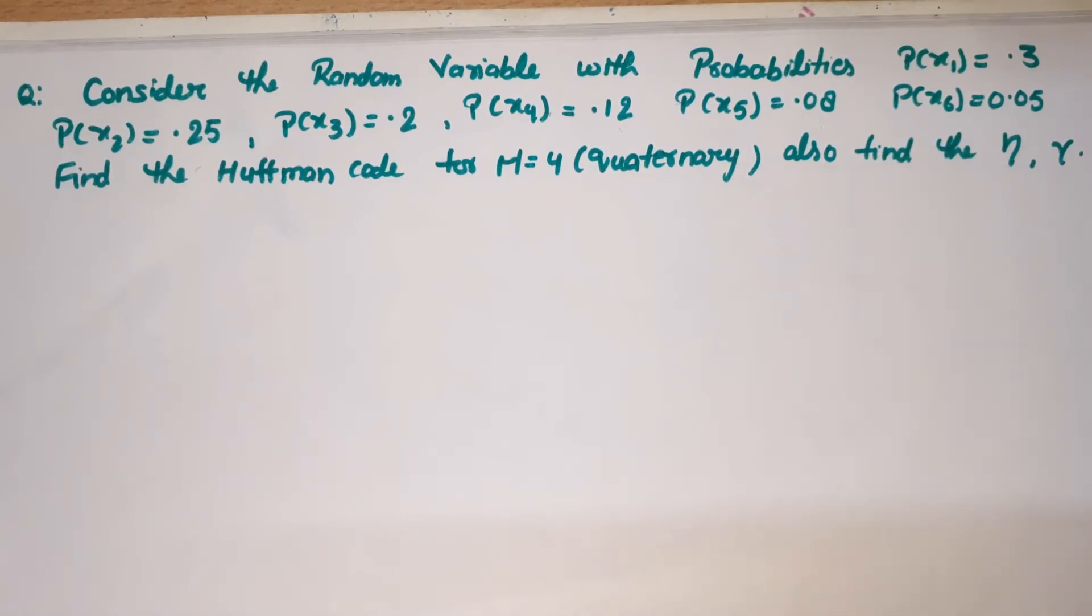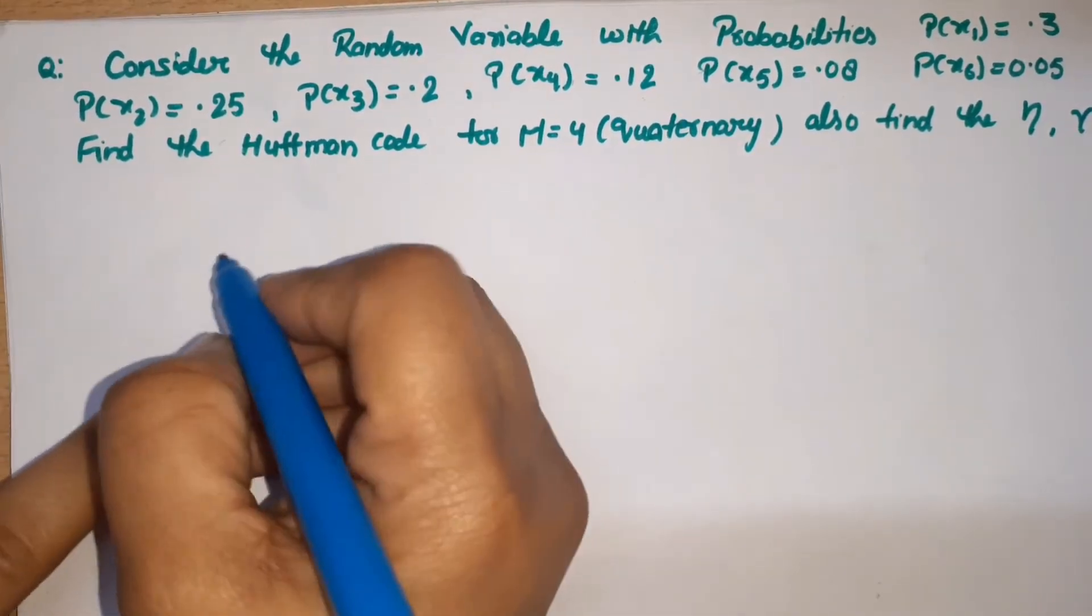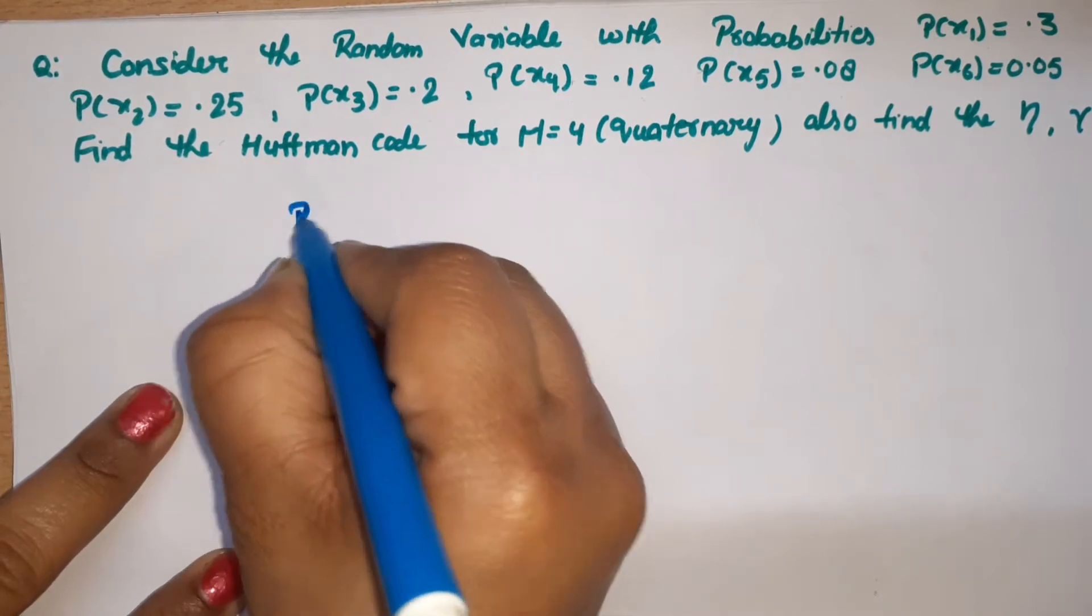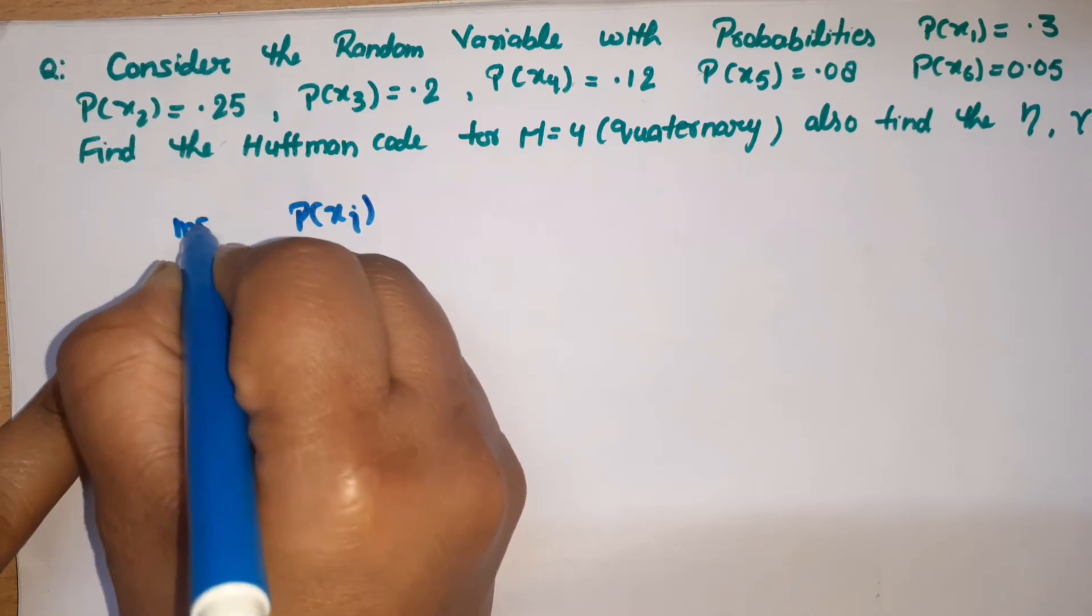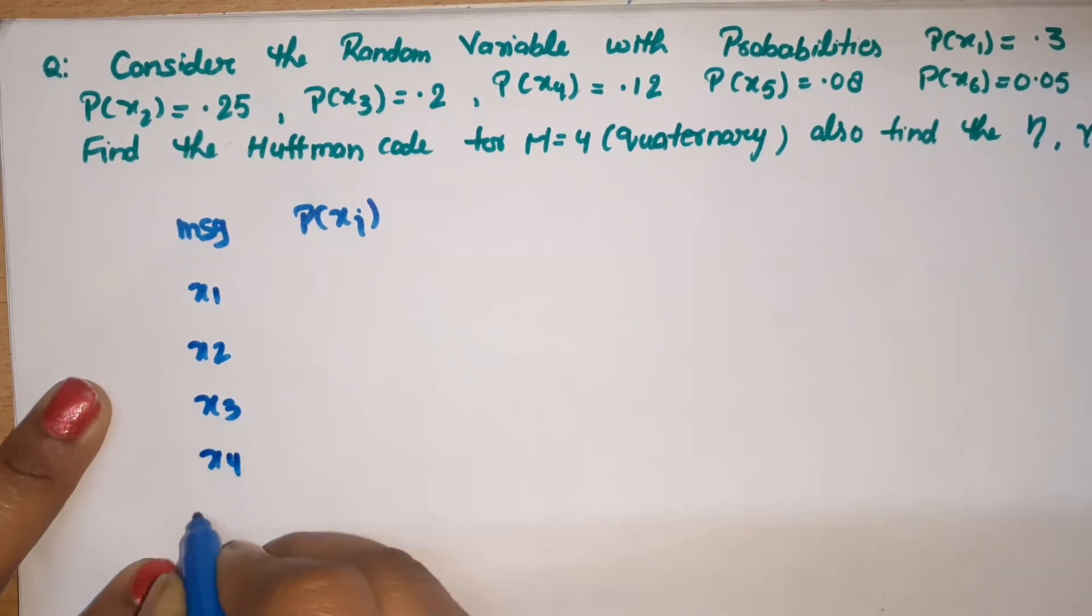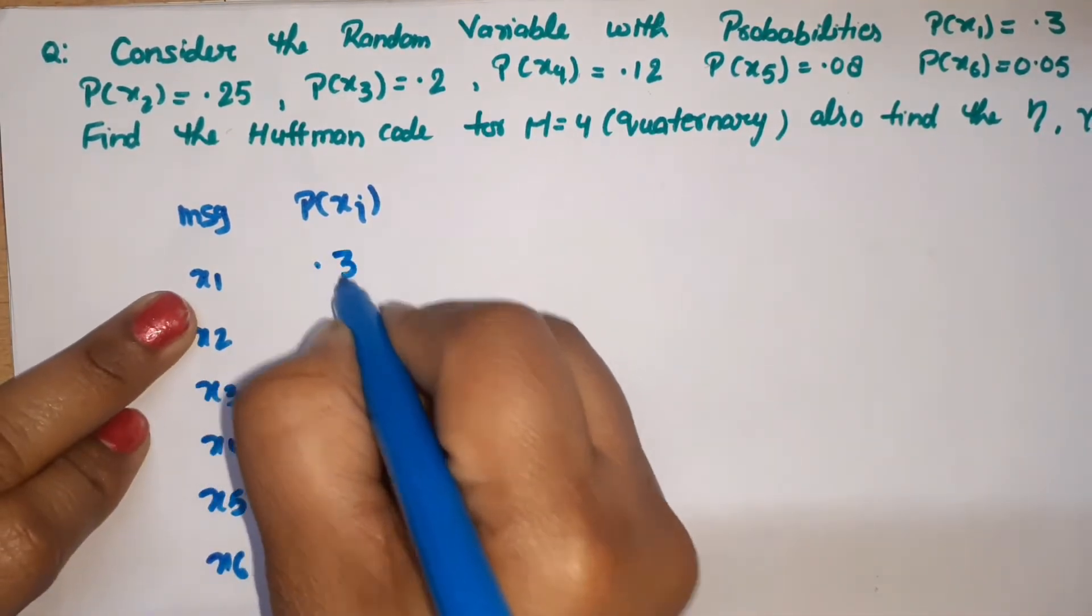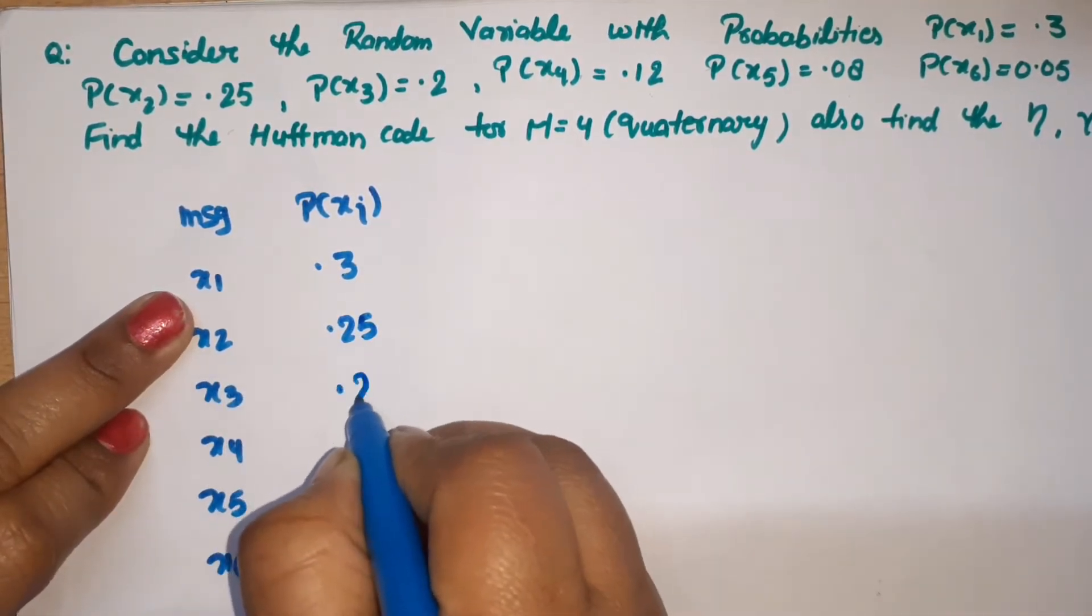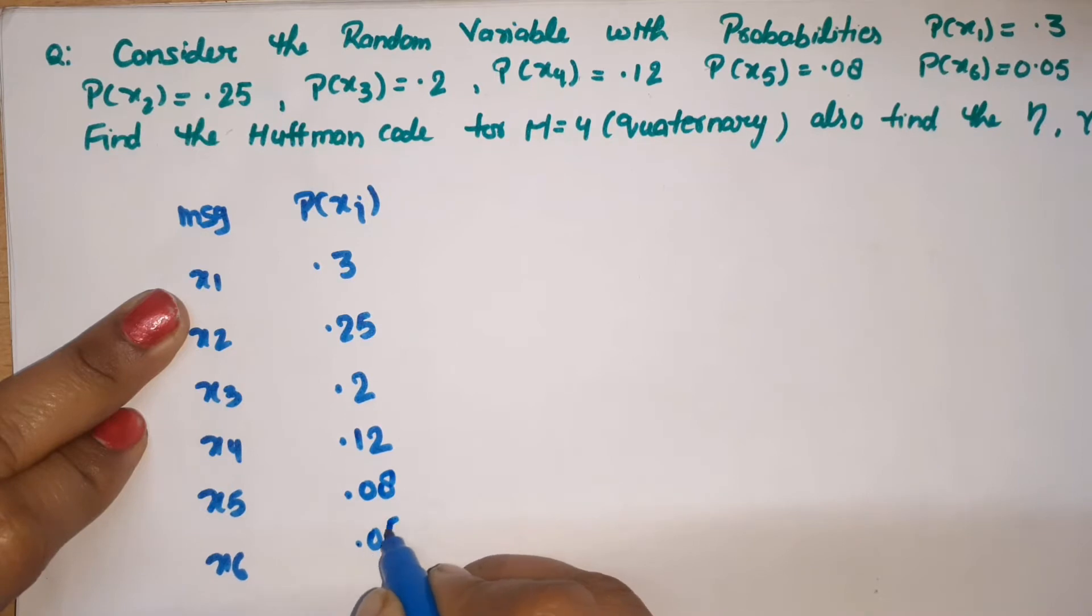For quaternary code, the first step is to find the Huffman Code. We arrange the probabilities in descending order. In this question, the probabilities are already arranged. We have messages x1, x2, x3, x4, x5, x6 with respective probabilities 0.3, 0.25, 0.2, 0.12, 0.08, 0.05.